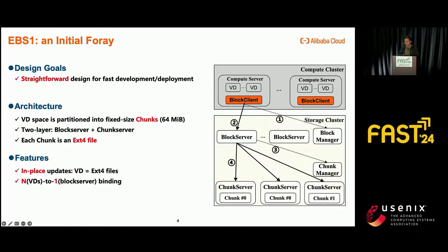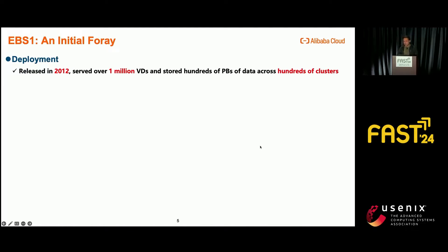The chunk servers treat each chunk as an EXT4 file and perform the corresponding I/O. For simplicity, EBS1 has two design features. First, any user's modifications on the virtual disk are essentially reflected on the corresponding EXT4 files — therefore this follows in-place updates. Moreover, we adopt an N-to-1 mapping between virtual disk and block servers, meaning each virtual disk is only managed by one block server, and a block server can host multiple virtual disks. EBS1 was released in 2012 and has served over one million virtual disks.